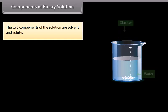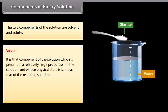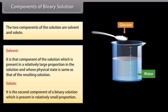Components of binary solution: The two components of the solution are solvent and solute. Solvent is that component of the solution which is present in a relatively large proportion in the solution and whose physical state is same as that of the resulting solution. Solute is the second component of a binary solution which is present in relatively small proportion.